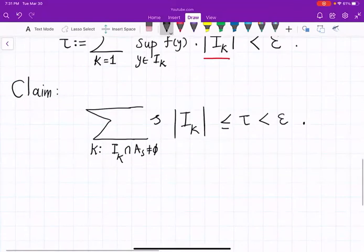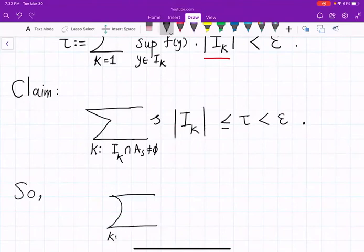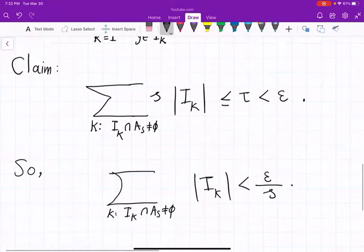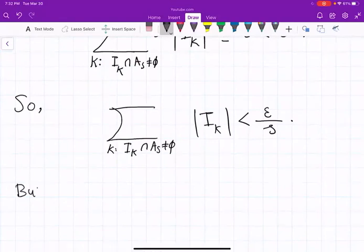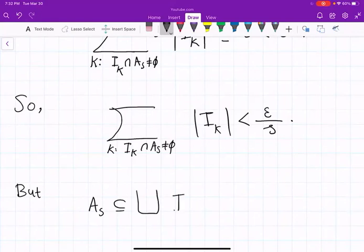And as a result, the summation over the same k's, that means k's where I_k contributes to covering A_s, of the length of I_k is less than epsilon divided by s. But A_s is covered by union of those I_k's, where I_k intersection with A_s is non-empty, pretty much by very choice of I_k's. We picked every one that contributed to covering A_s. So all of the I_k's covered the whole interval [a,b], and we're done.